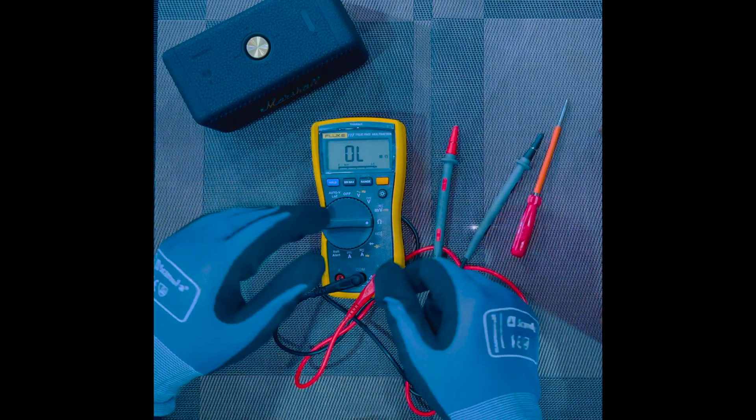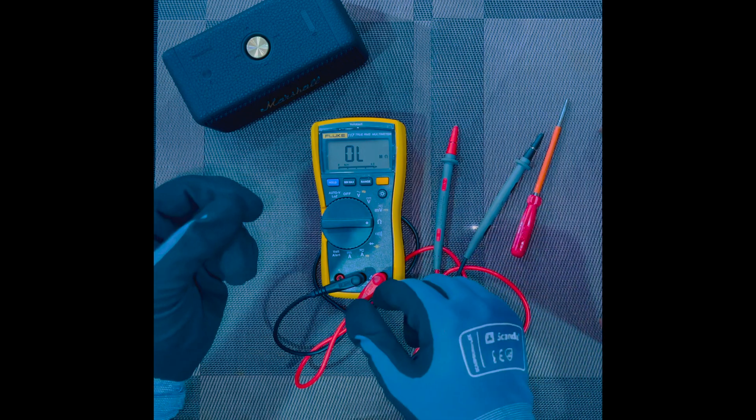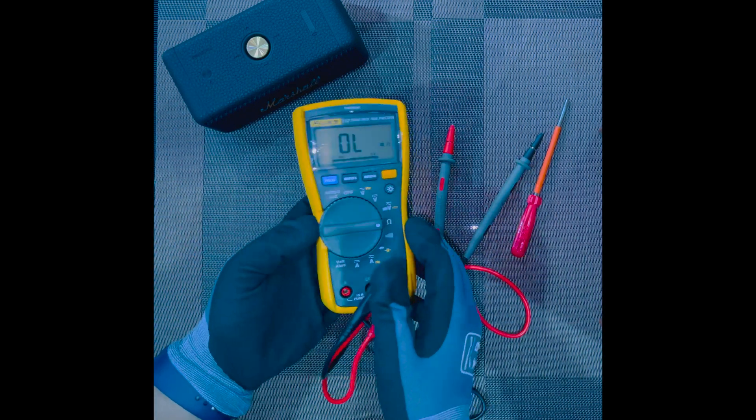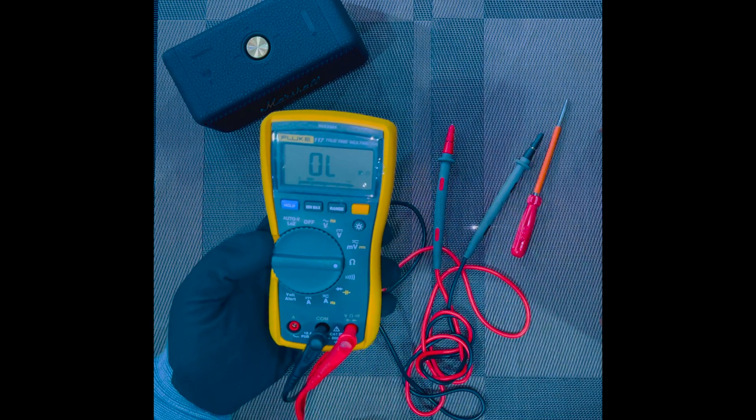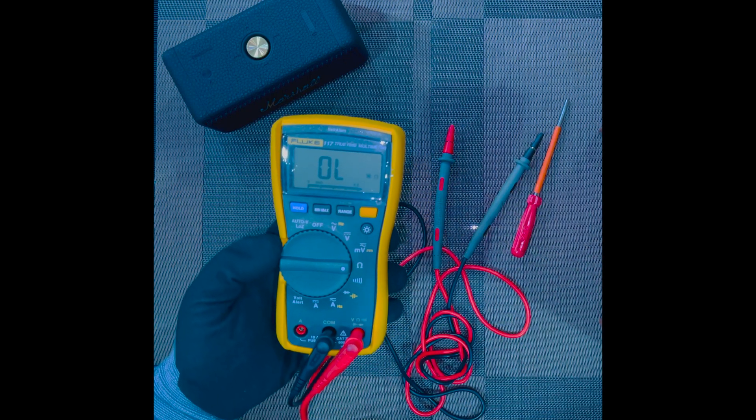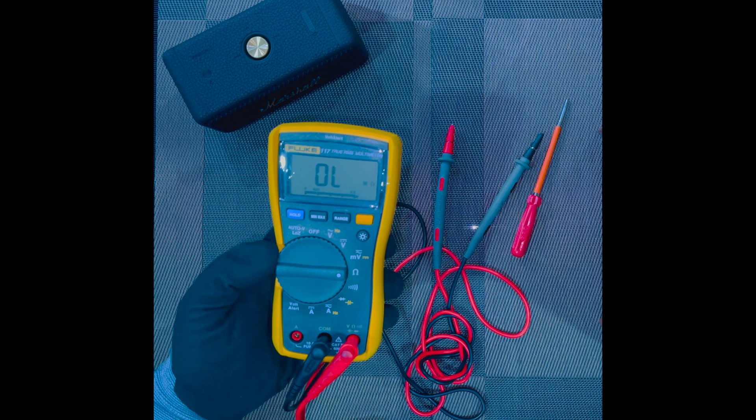It is important to take this reading as a reference as the resistance will need to be subtracted for any part of the circuit that we are going to test. OL means open circuit, so this completes our resistance part.